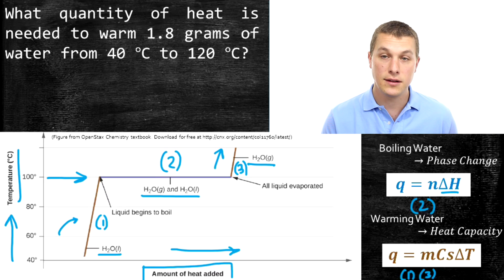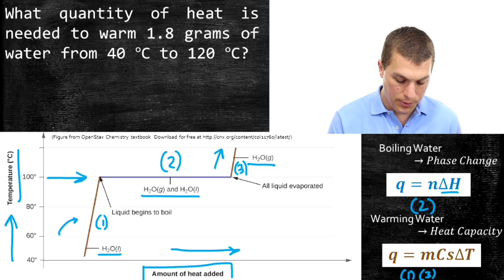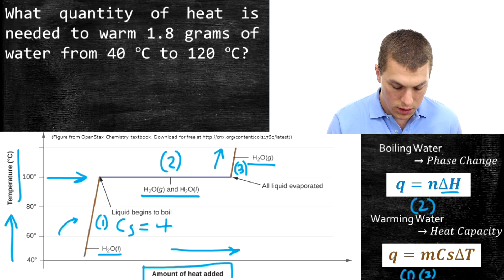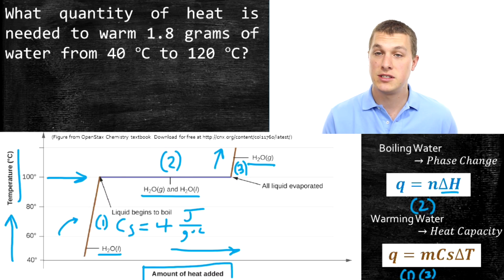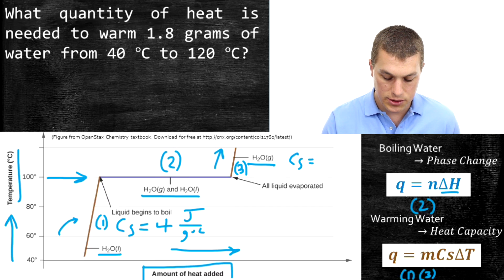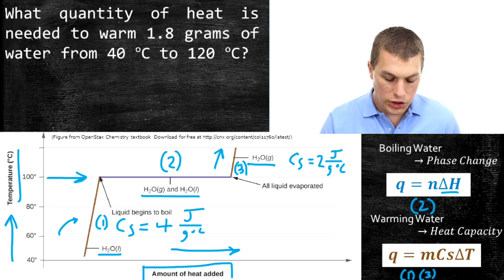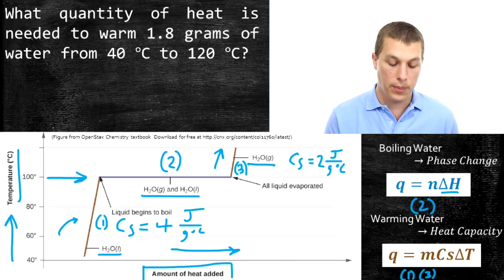Another important detail: the heat capacity of liquid water and gaseous water is different. The heat capacity for liquid water is about 4 joules per gram degree Celsius, but for gaseous water it's about 2 joules per gram degree Celsius, because gaseous water has a different structure and it takes a different amount of energy to heat it. So you have to carefully track which heat capacity you're using at each part of the problem.